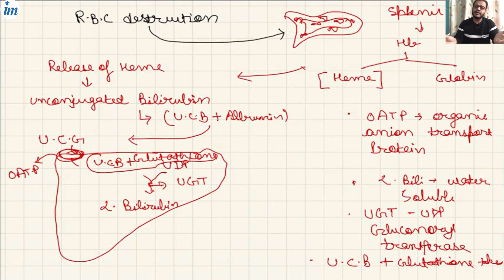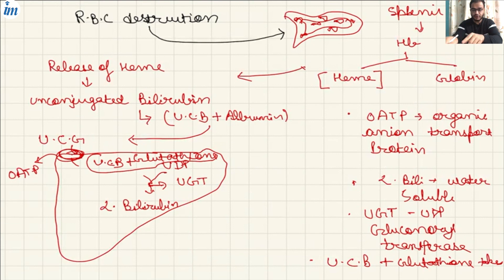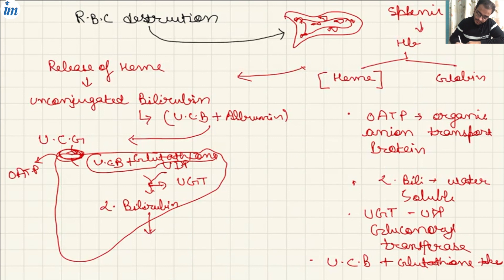For bilirubin metabolism, unconjugated bilirubin has to come to the liver. It gets detached from albumin and enters the liver via OATP. When it enters the hepatocyte, the glutathione reaction takes place to prevent back reflux. Then, in the liver, unconjugated bilirubin binds with UDP, and with the help of enzyme UGT, it forms conjugated bilirubin — a water-soluble molecule. This conjugated bilirubin then goes to the intrahepatic and extrahepatic bile ducts.